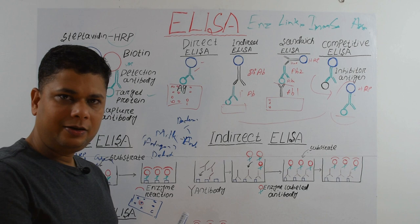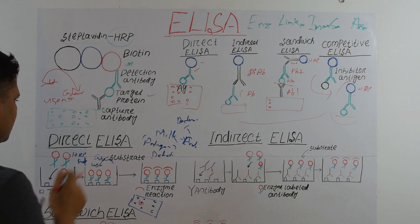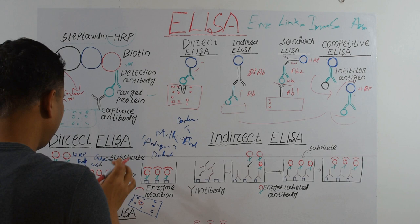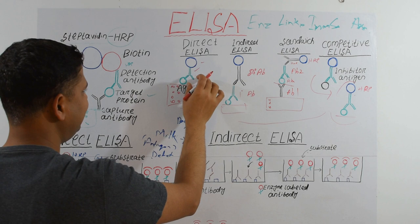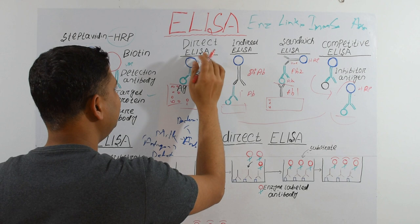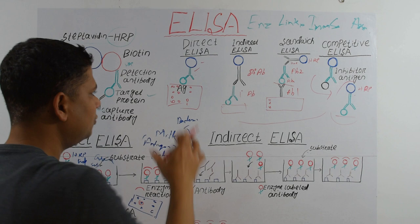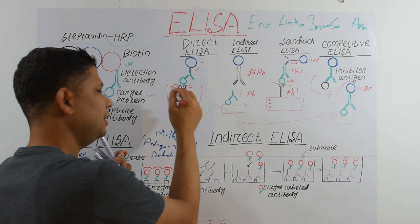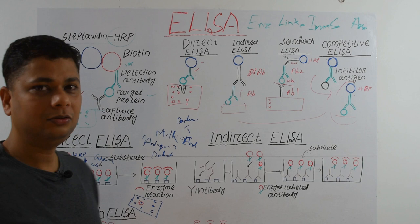The advantages of Direct ELISA are: it is very fast because we directly use the HRP-conjugated antibody, so it is less time-consuming. Also, because we use an antibody directly conjugated with HRP, there is no cross-reactivity with other antigens, making this process very specific.